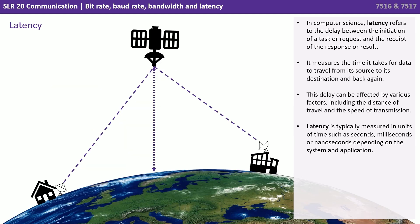In computer science, latency refers to the delay between the initiation of a task or request and the receipt of the response or result. It measures the time it takes for data to travel from its source to its destination and back again. This delay can be affected by various factors, including the distance of travel and the speed of transmission. Latency is typically measured in units of time such as seconds, milliseconds or nanoseconds, depending on the system and application.